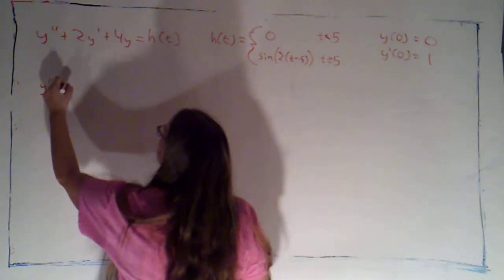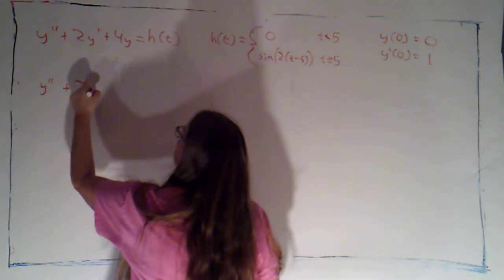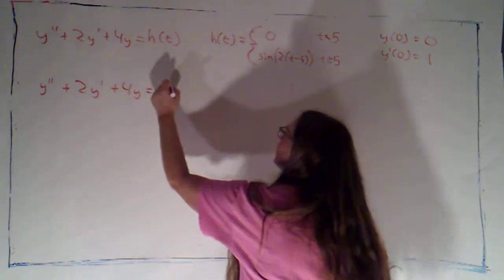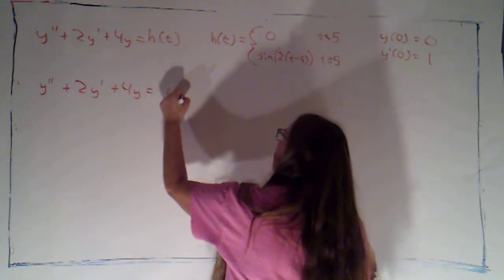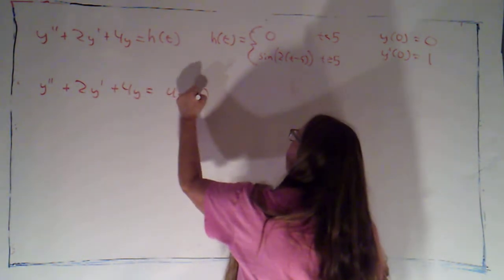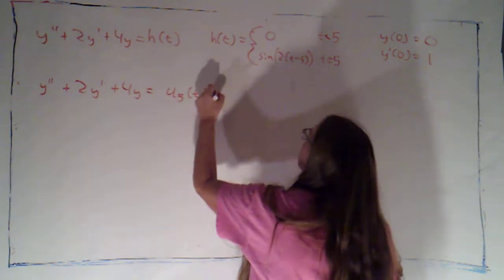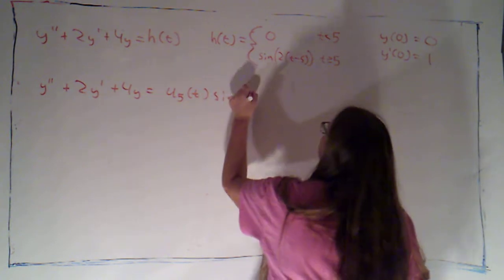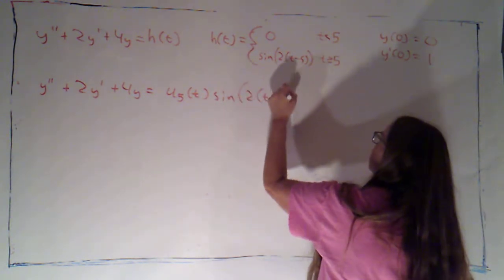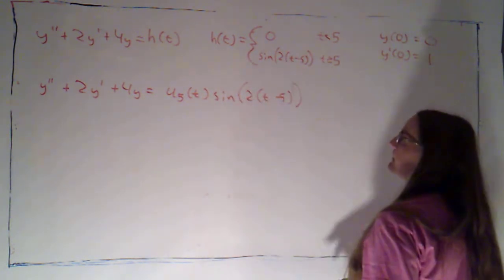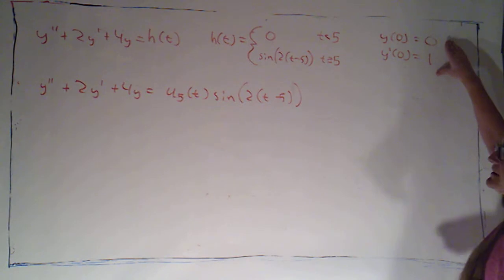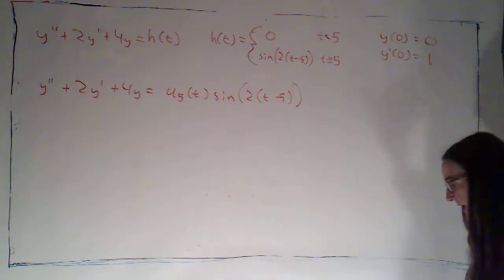The first thing I want to do is rewrite this using the Heaviside function, which is that on-switch that's going to turn on that forcing function at time 5. So: y double prime plus 2y prime plus 4y is equal to the Heaviside function at 5 times sine of 2 times t minus 5, with these initial conditions.